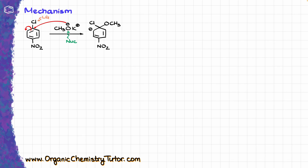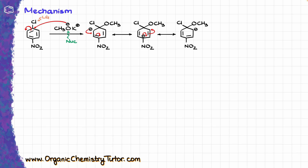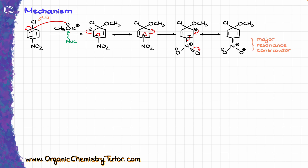Just like in electrophilic aromatic substitutions, resonance plays a huge role here. I can draw multiple resonance structures by moving electrons around the ring, giving several intermediates. Finally, I remember that the nitro group has a structure very relevant to resonance, so I can draw another resonance structure involving the nitro group. Because the negative charges are on the oxygen in that last structure, it is going to be a major resonance contributor and is fairly important for the overall mechanism. That was the addition part of the addition-elimination mechanism.